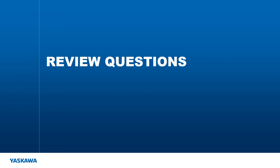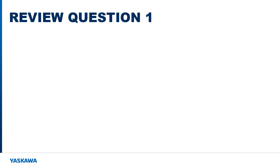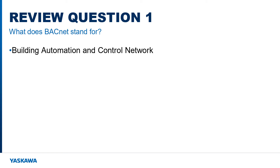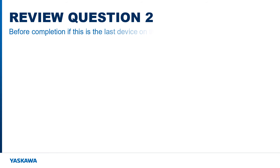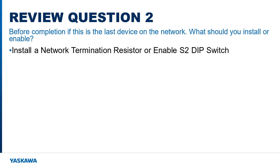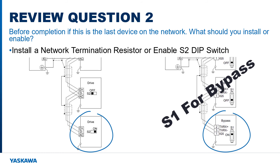Now it's time for review questions. What does BACnet stand for? BACnet stands for Building Automation and Control Network, found in many commercial environments. Before completion, if this is the last device on the network, what should you install or enable? You should install a network termination resistor if you are at the end of the line, or use Yaskawa's built-in resistor by enabling DIP switch S2 on the control PCB.